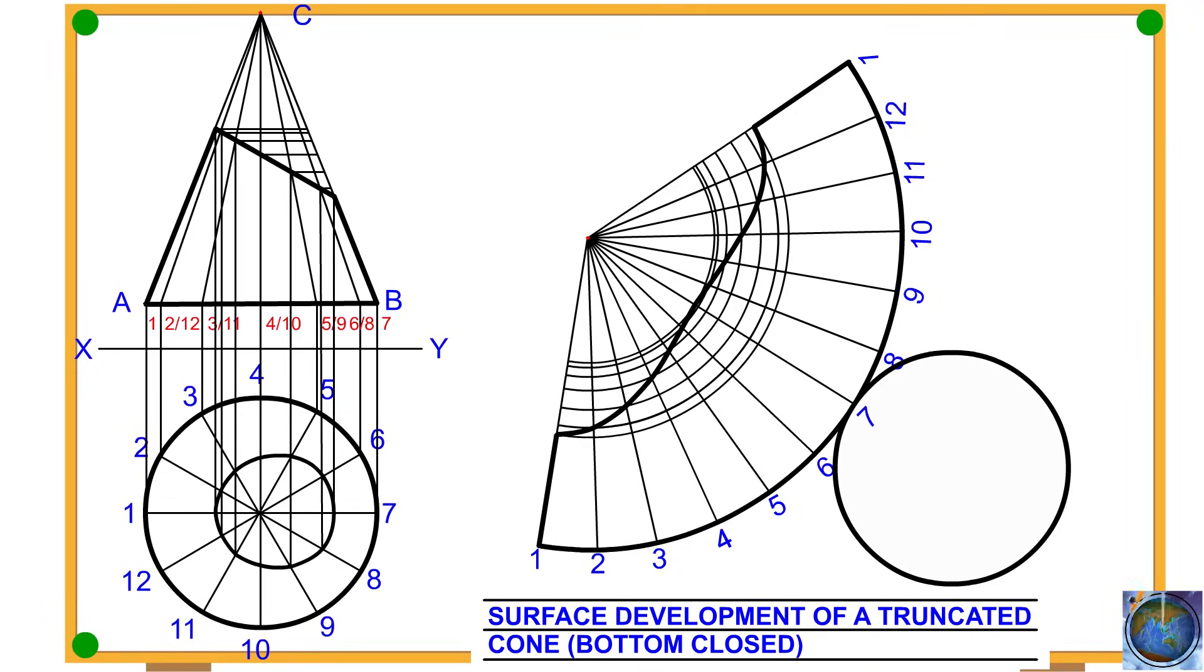Surface development of a truncated cone, bottom closed. Front elevation. Plan. Note that instead of writing front elevation you can use FE. Additionally, it's advisable to use uppercase when writing the names of the shapes.